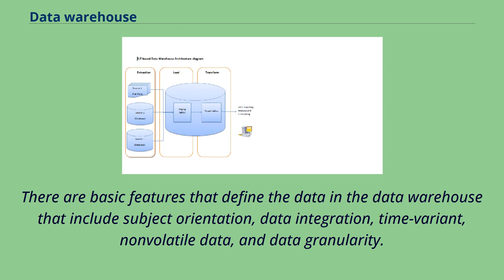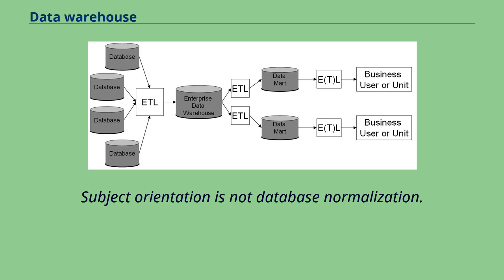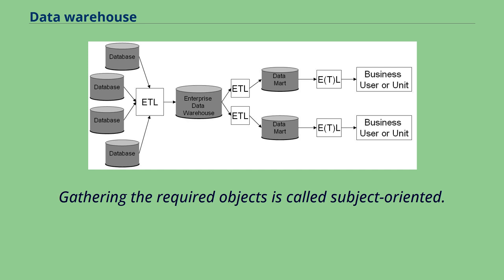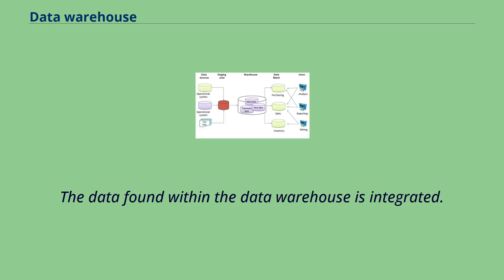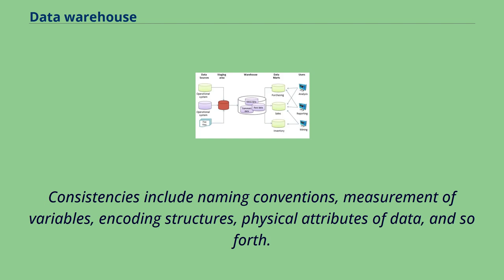There are basic features that define the data in the data warehouse: subject orientation, data integration, time variant, non-volatile data, and data granularity. Unlike operational systems, the data in the data warehouse revolves around subjects of the enterprise. Subject orientation is not database normalization, but can be really useful for decision-making. The data found within the data warehouse is integrated; since it comes from several operational systems, all inconsistencies must be removed. Consistencies include naming conventions, measurement of variables, encoding structures, and physical attributes of data.